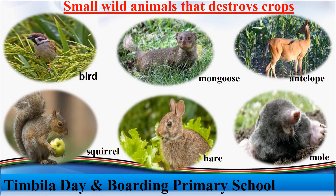Albinus says rice — a clap to Albinus. So the bird eats the seeds of the rice plants. Are we together? The next animal — we call it a mongoose. Then we look at the next one: which crop does an antelope destroy in that picture? Be audible. Naomi says maize — a clap to Naomi.